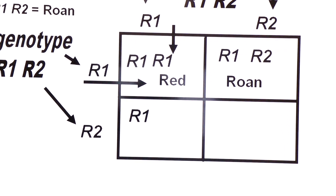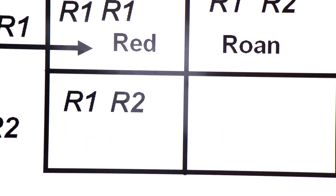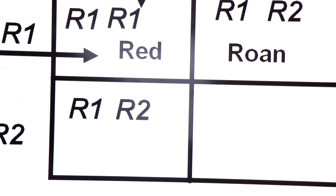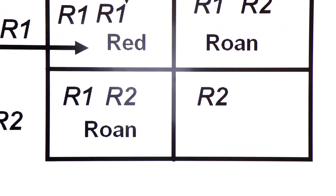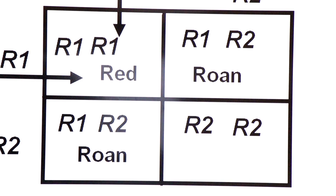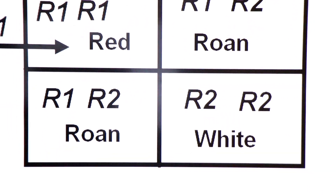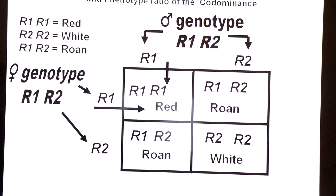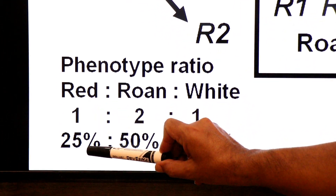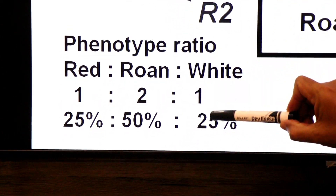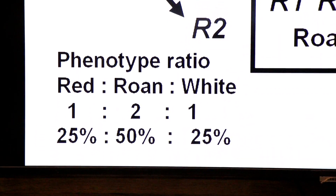Top से capital R1 + left से capital R2 → phenotype again roan. Top से capital R2 + left से capital R2 → genotype capital R2 capital R2, phenotype white. So the results are: 1 red, 2 roan, 1 white. Phenotype ratio: red 1 (25%), roan 2 (50%), and white 1 (25%)।